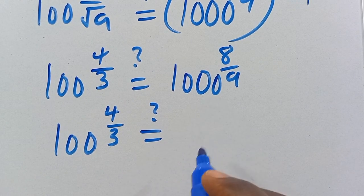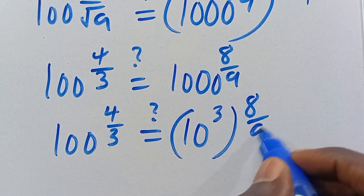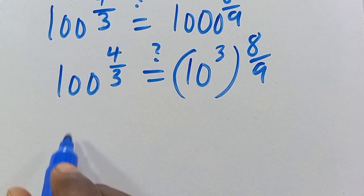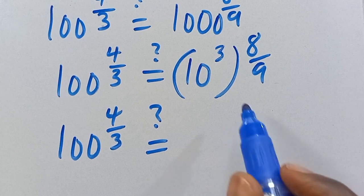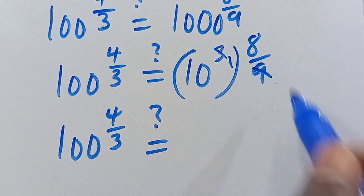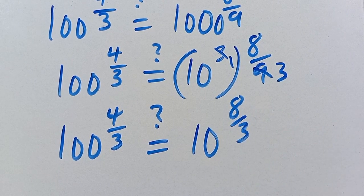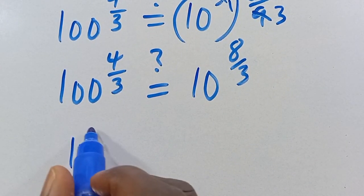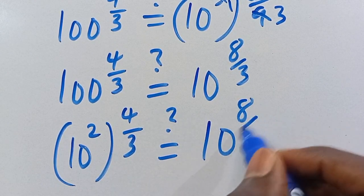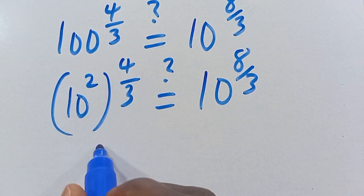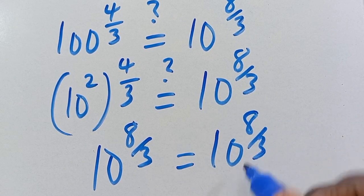For the right side: 1000^(8/9) = (10³)^(8/9) = 10^(3×8/9) = 10^(8/3). Since both sides equal 10^(8/3), x = 16/9 is also satisfied. Therefore, both solutions x = 0 and x = 16/9 are valid.